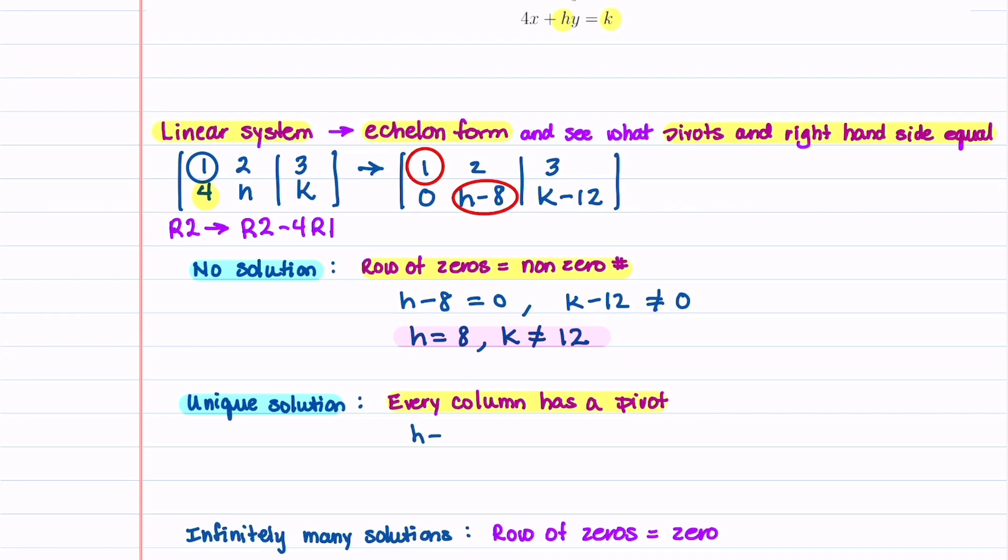So that means that H minus 8 cannot be equal to 0, and that will make sure that we have a pivot there. So this is going to mean that H is not equal to 8. And let's go ahead and highlight that.